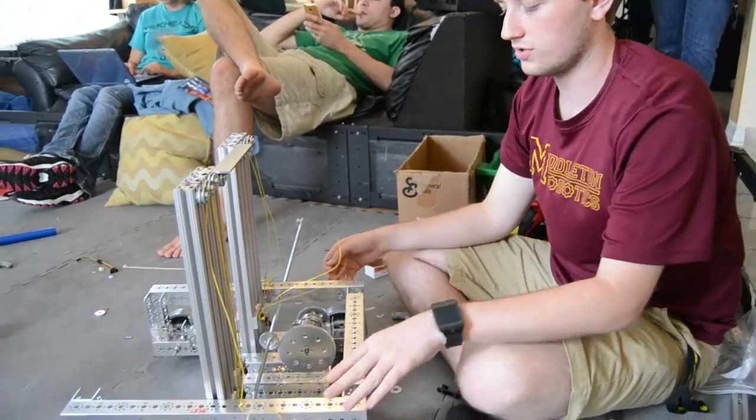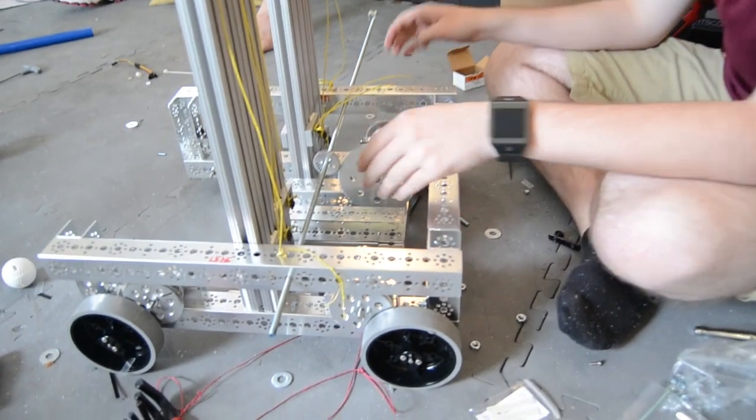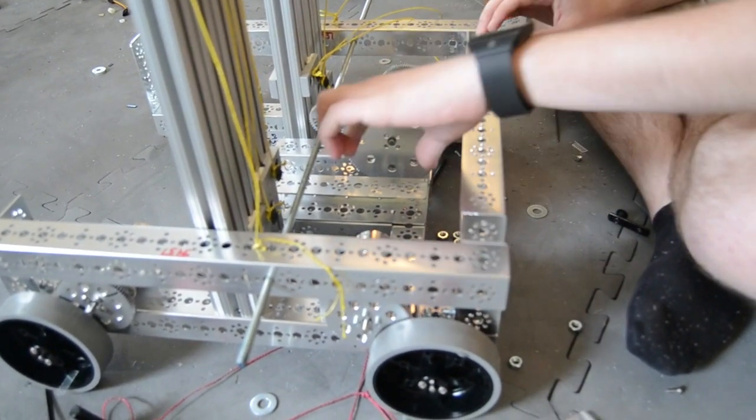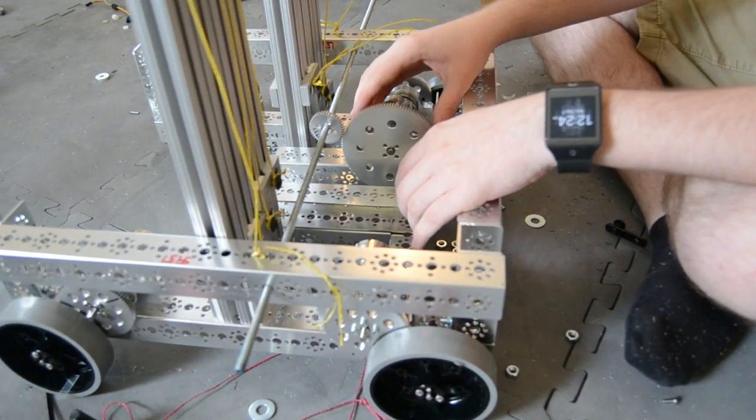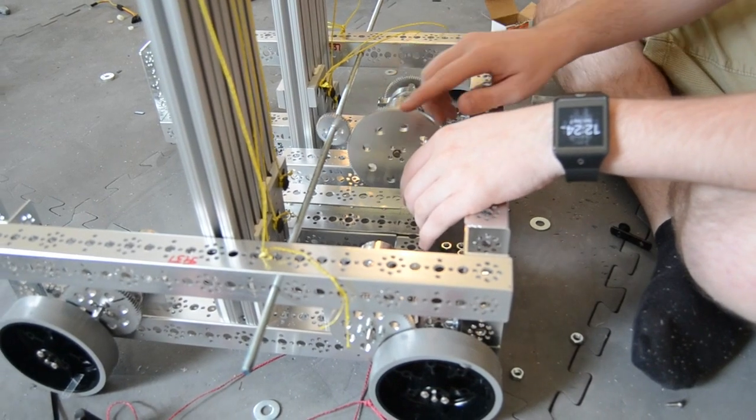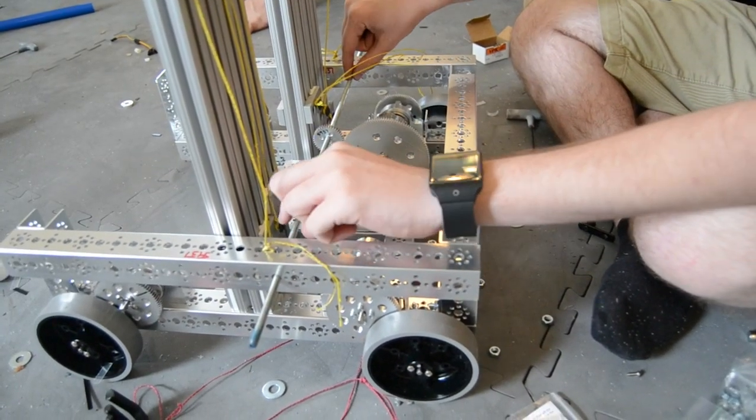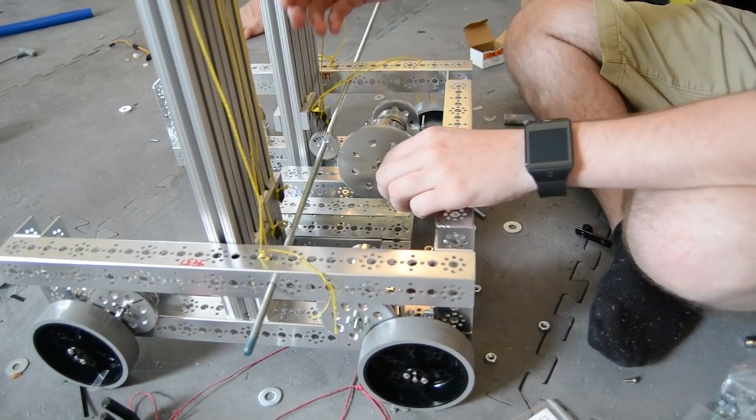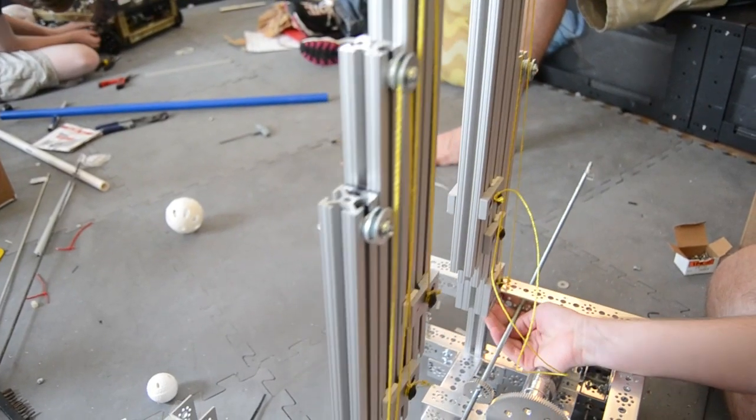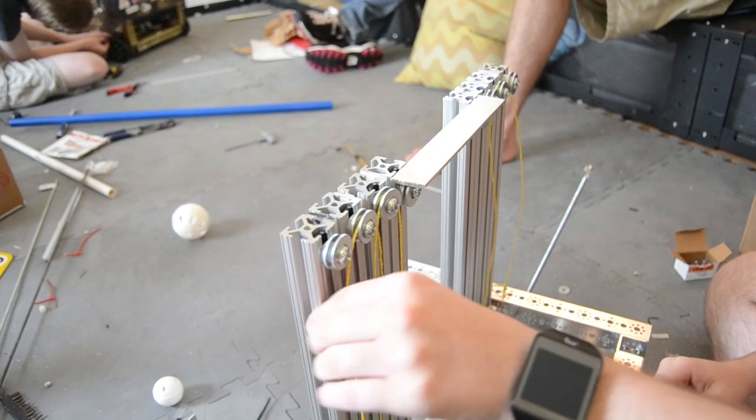But right now, I'm working on trying to mount the motors. So what we're going to have is we're going to have one motor here and one motor on the exact opposite side with a one to three ratio. So we can get three times the speed rod that will collect the string here and here. And so we'll raise the lift. And in a cascading effect.